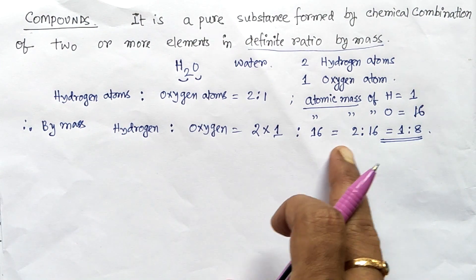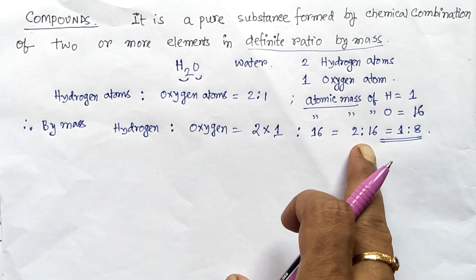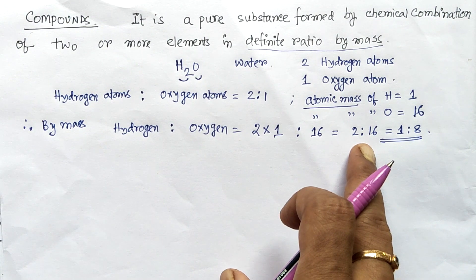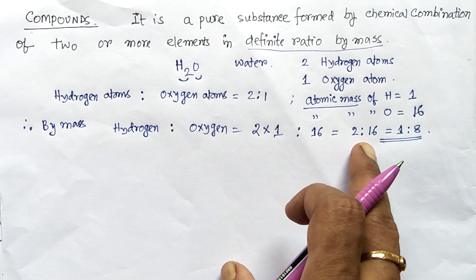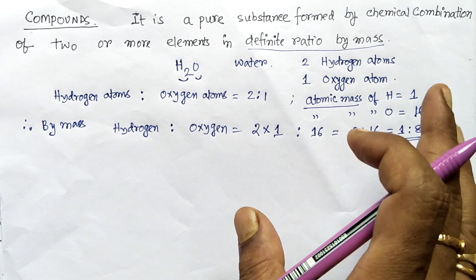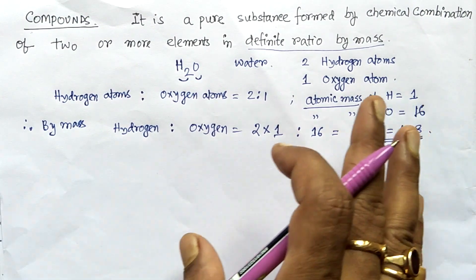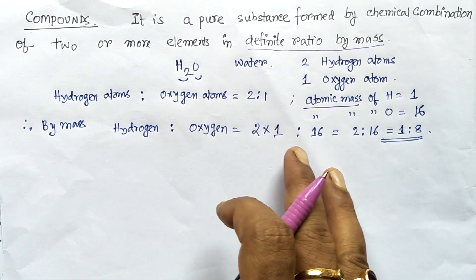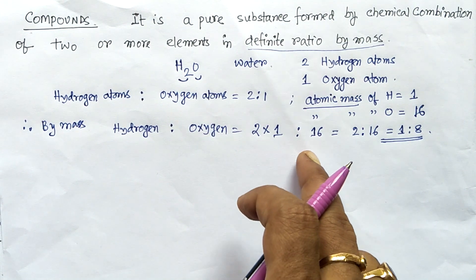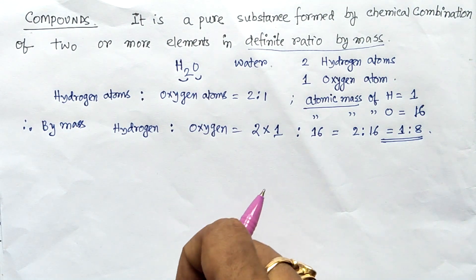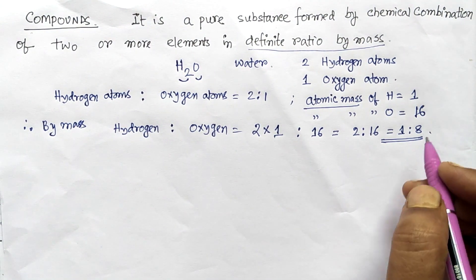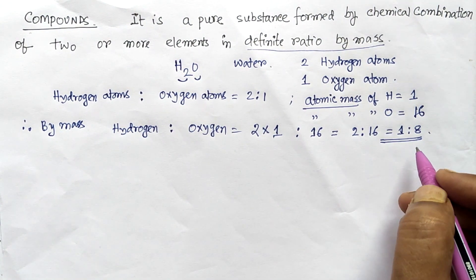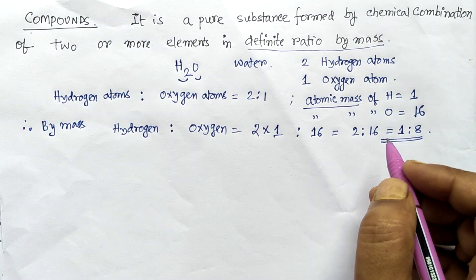The source of water may be different — from your house, my house, school, and so on. But the ratio of hydrogen to oxygen by mass will always be equal to 1:8.